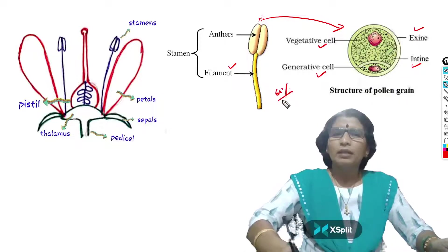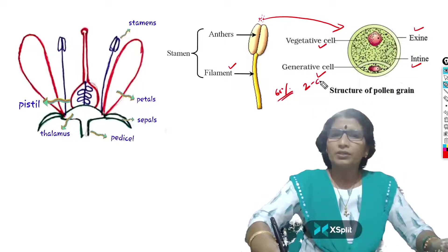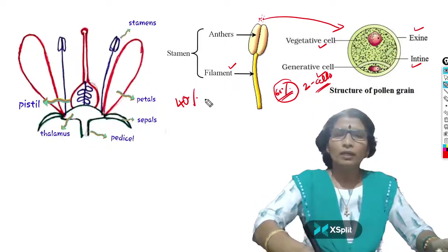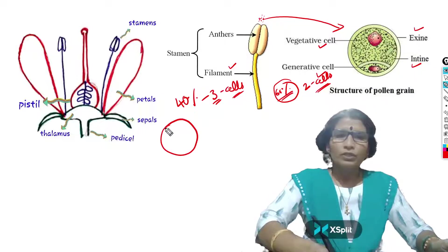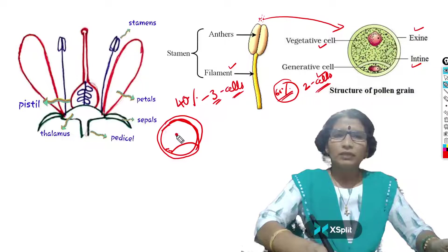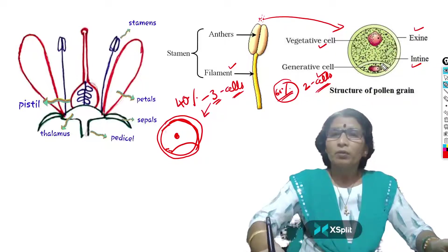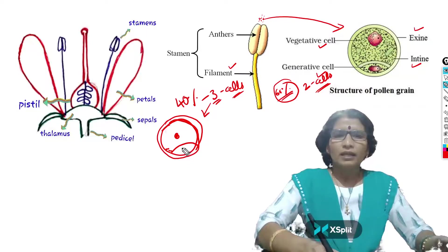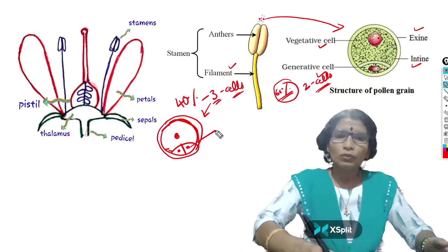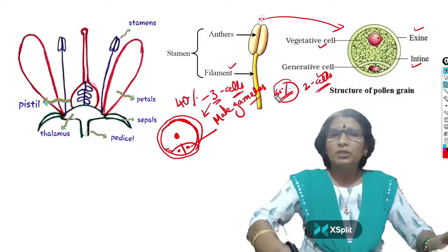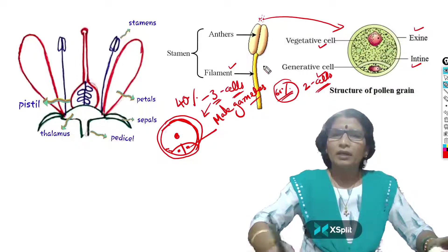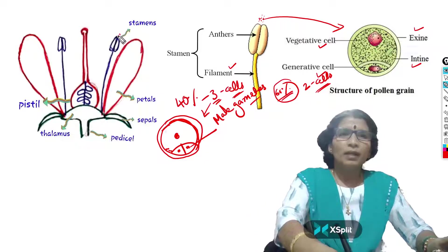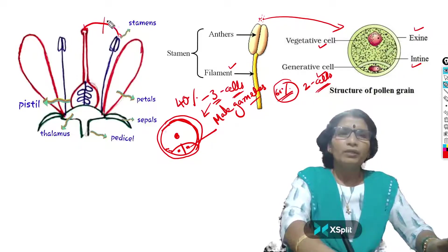Sixty percent of plants release pollen grains in the two-cell stage, while the remaining forty percent liberate pollen grains in the three-cell stage. In the three-cell stage, the generative cell divides into two cells called male gametes before release. These pollen grains, when liberated from the anther, reach the stigma by the process of pollination — with the help of air, water, or animals.